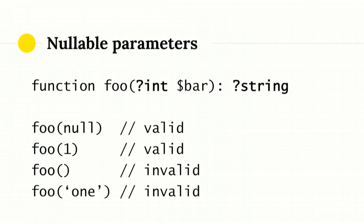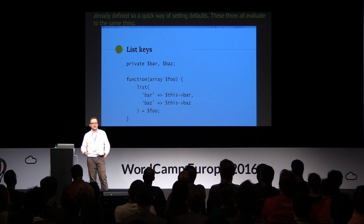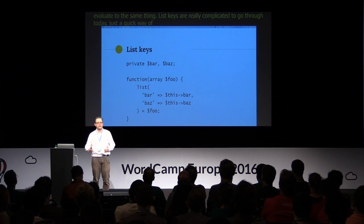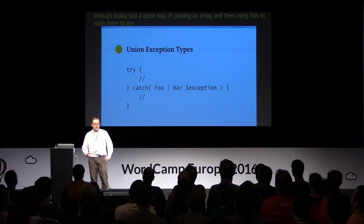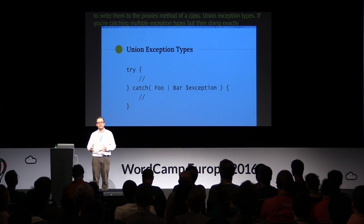In PHP 7.1: just as you can say a function should return a particular type, you can also say it should return nothing at all with the void return type. Nullable parameters are a way of saying you can pass null or an integer without setting a default value, and you can do the same with return values. The null coalesce equals operator lets you set a value on foo if it doesn't already have a value or isn't already defined — a quick way of setting defaults. List keys are a quick way of passing in an array and using list to write them to the properties of a class. Union exception types: if you're catching multiple exception types and doing exactly the same thing with them, you can now catch multiple types using the union operator rather than duplicating code blocks.